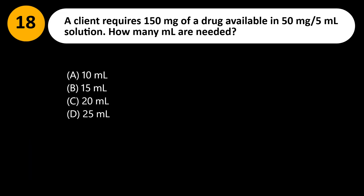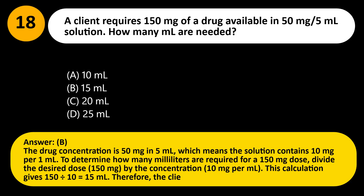A client requires 150 mg of a drug available in 50 mg per 5 ml solution. How many ml are needed? A. 10 ml. B. 15 ml. C. 20 ml. D. 25 ml. Answer: B. The drug concentration is 50 mg in 5 ml, which means 10 mg per 1 ml. To determine how many ml are required for a 150 mg dose, divide 150 mg by 10 mg per ml: 150 divided by 10 equals 15 ml. Therefore, the client needs 15 ml of the solution.